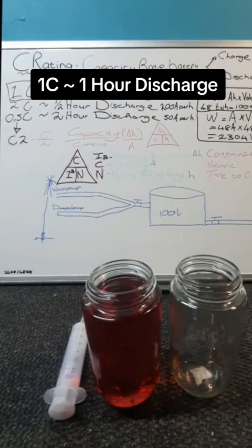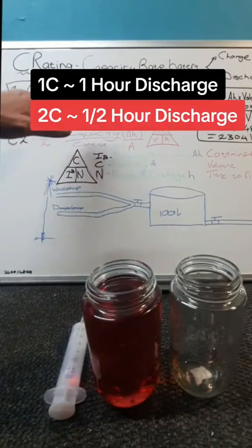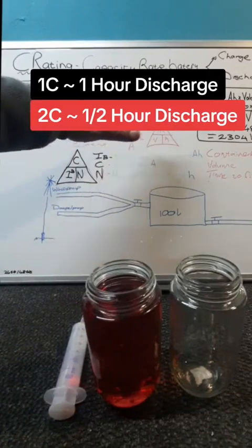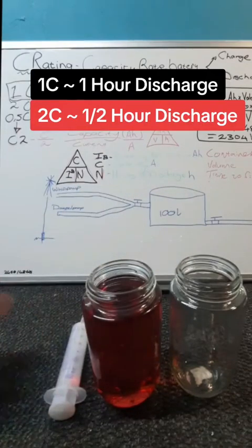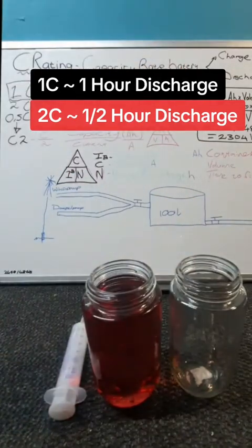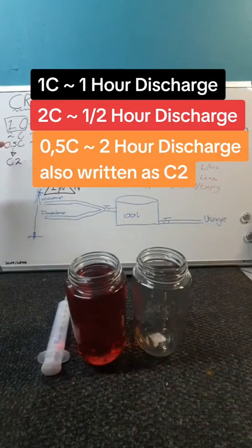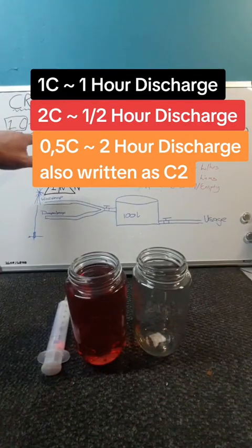We're going to look at a few examples. Then a 2C battery basically means that in a half an hour you can charge and discharge the battery. I put it here basically on a 100 amp hour battery. Then you get sometimes they will write 0.5C and that says to you two hours discharge and two hours charge.